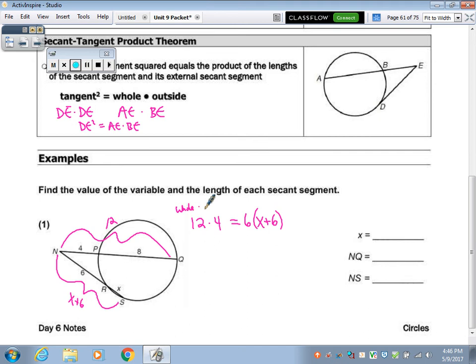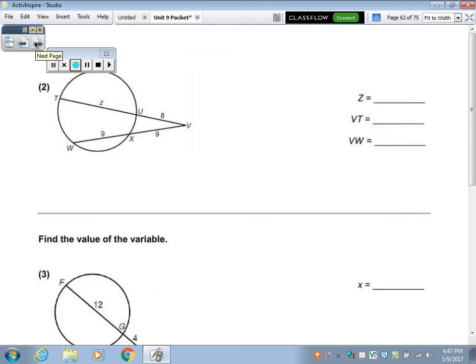And the outside is 6. So this is whole times outside, and this is whole times outside. Alright, then you can just do this algebra. That's 48, distribute, minus 36 on both sides, divide 6 on both sides. So the X is 2, and NQ, the whole thing is 12. And NS, that whole thing will be an 8, because 6 plus 2. Whole times outside, whole times outside.